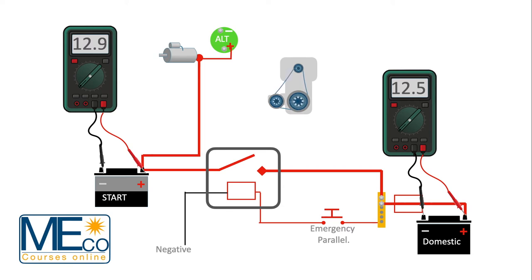The voltage on the start battery is increasing as it's being charged by the alternator. The smart combiner is programmed to connect the start and domestics together only once the preset voltage has been met.